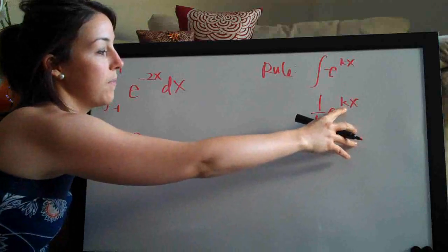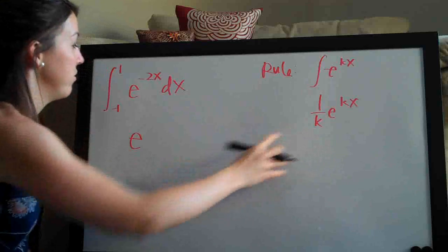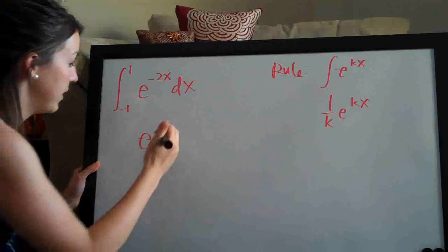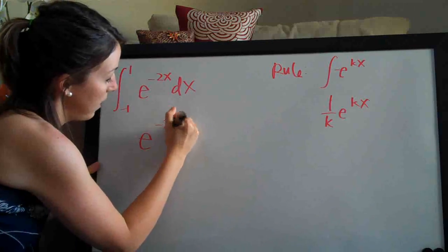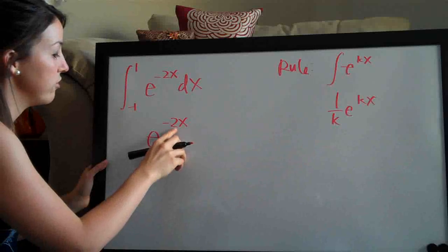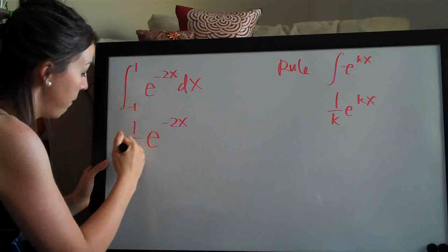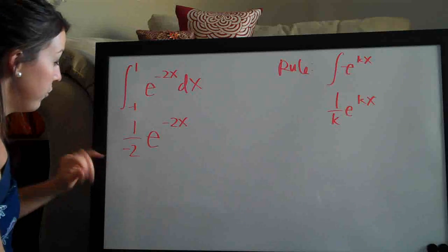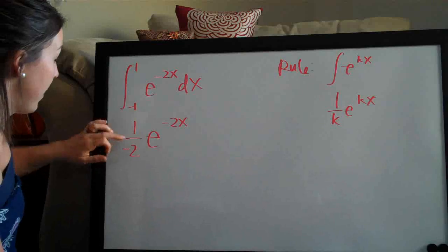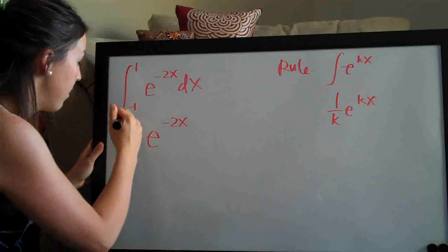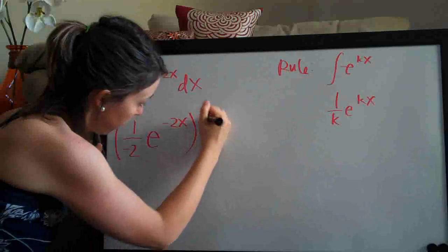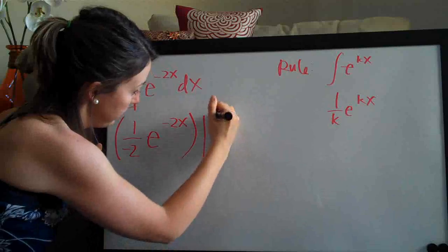So this exponent here, the coefficient on the exponent stays and we just divide. So what that ends up looking like, the entire exponent stays and we just divide by the coefficient. So that is the integral and now we have to evaluate from negative 1 to 1.